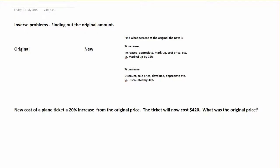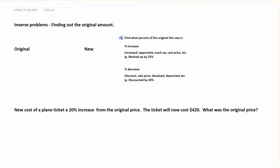We're going to be looking at inverse problems here for percentages. This is when we're working backwards — if we know the new sales price, or how much a house or car is worth now, we're working backwards to find out how much it used to be worth before it either went up or went down by a percentage. We have to figure out what percentage of the original this new price is.